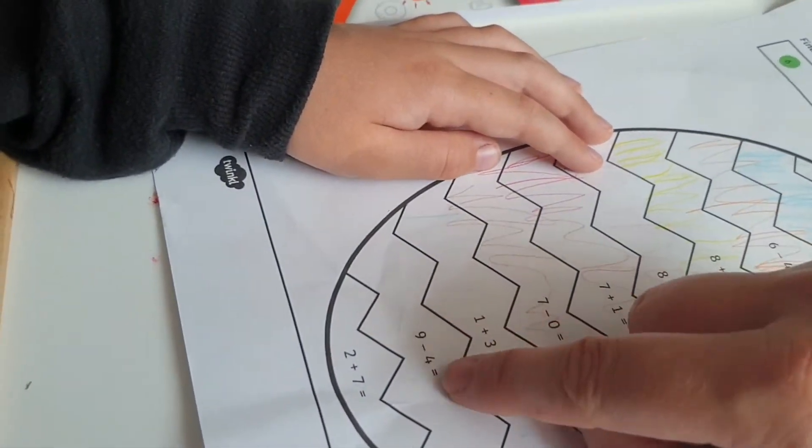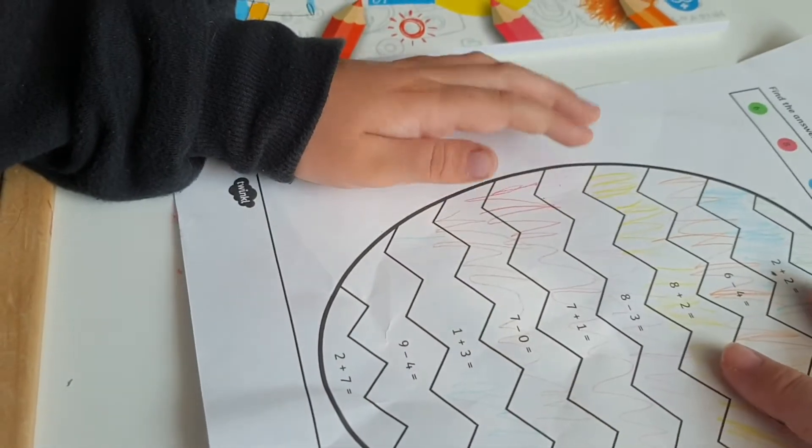So this time round what number have you got here? A nine and a four. Nine and a four.